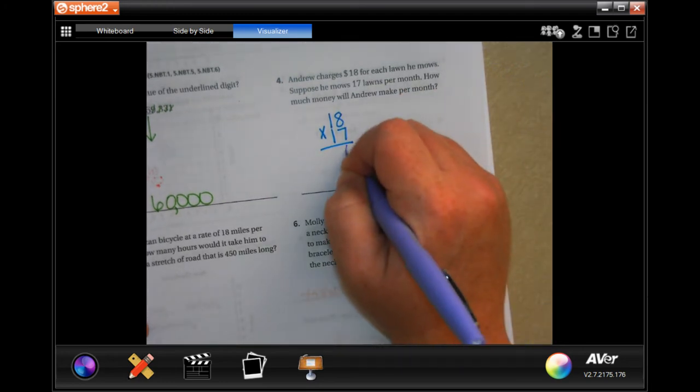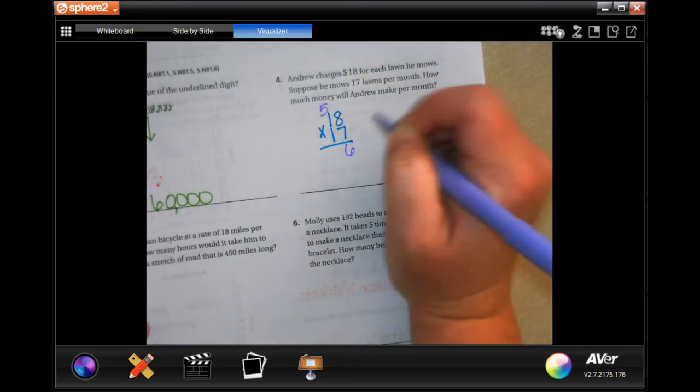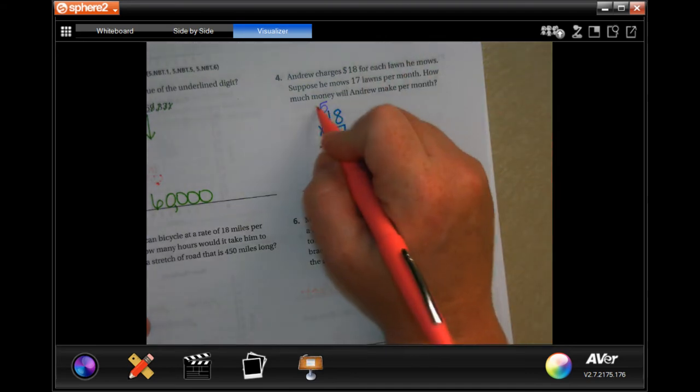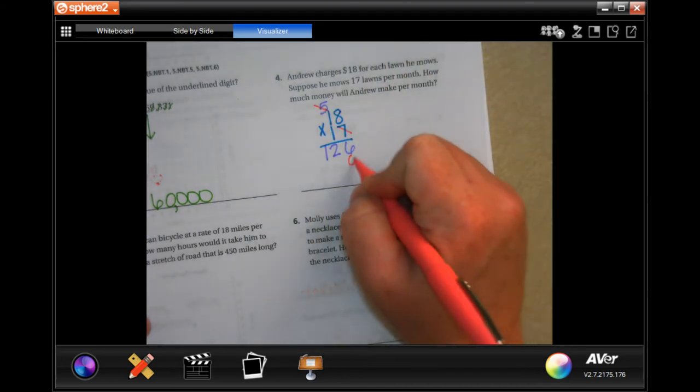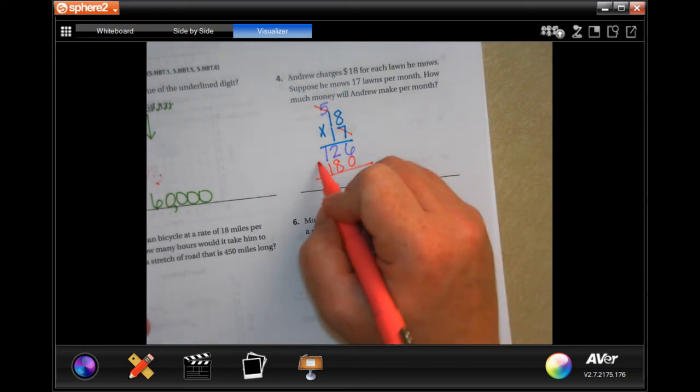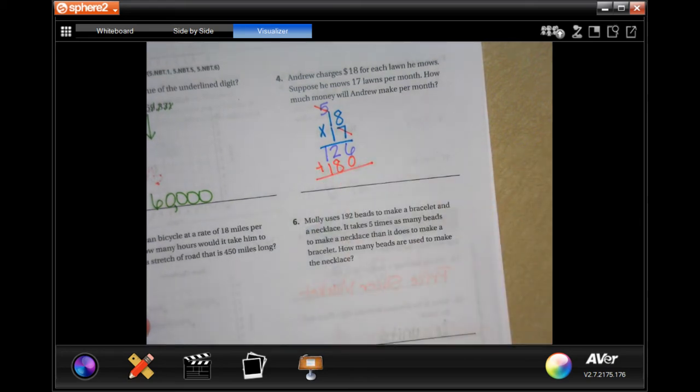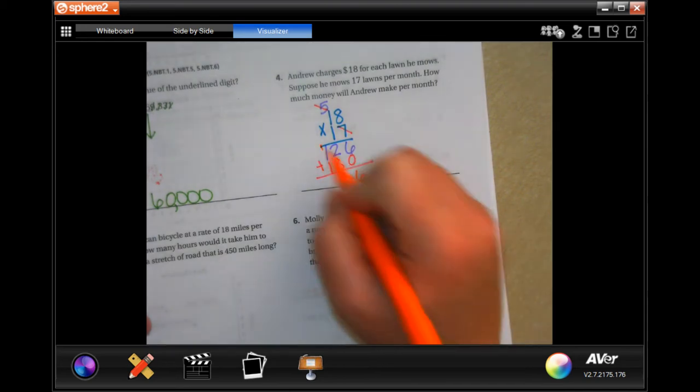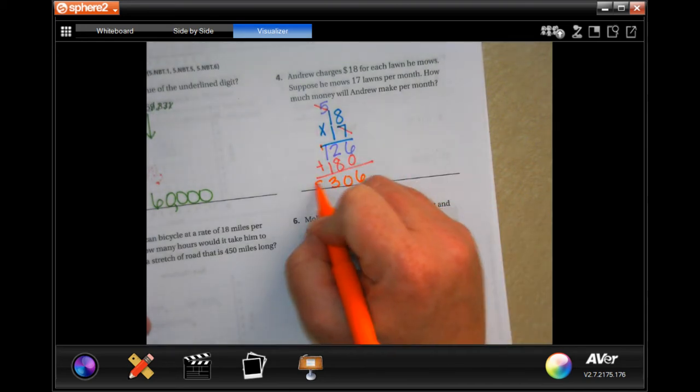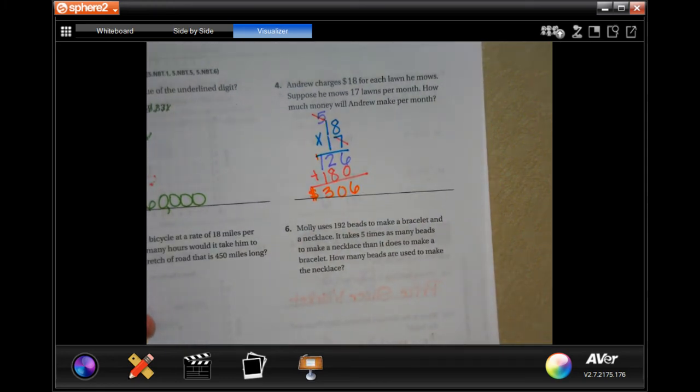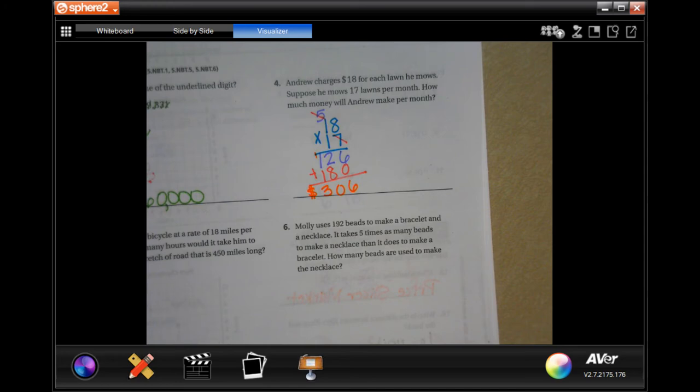7 times 8 is 56. There you have a 5. 7 times 1 is 7 plus 5 is 12. So we're going to tick, check, and toe. And then 1 times 18 is 18. We're going to add those up. So we have 6. We have 10. Carry the 1. And we have 3. So $306. Make sure you have your dollar sign. That is your word answer for your word problem.